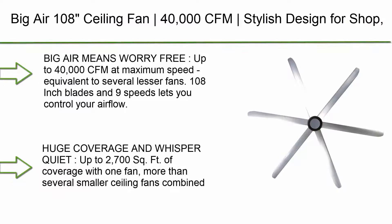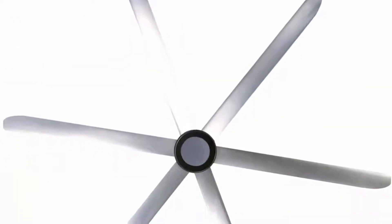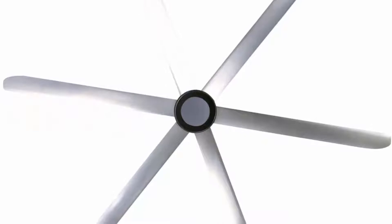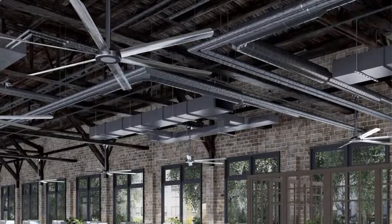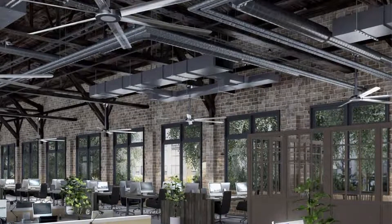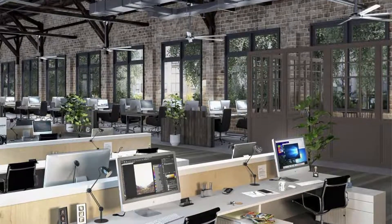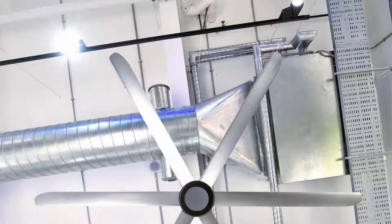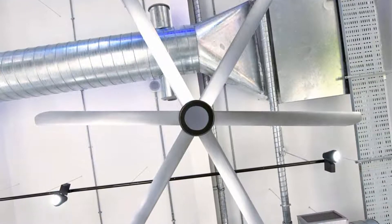Big Air 108 Ceiling Fan, 40,000 CFM. Stylish design for shop, commercial, residential, industrial. Anodized aluminum. Big Air means worry-free, up to 40,000 CFM at maximum speed, equivalent to several lesser fans. 108 inch blades and 9 speeds let you control your airflow. Support in Texas, 1-year all-inclusive warranty lets you buy worry-free. We take care of your replacement parts immediately.